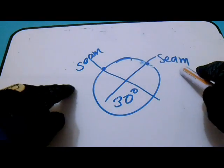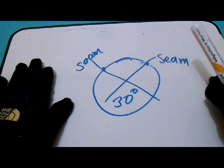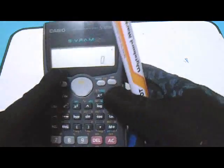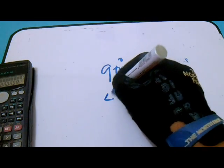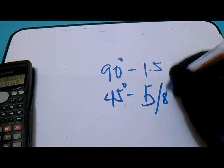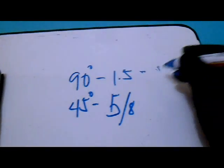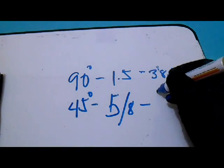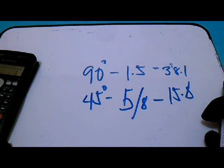This is very important. You must also check the seam line. From the take-off of the spool, our 90 degrees is 1.5 and 45 degrees is 5.8. In millimeters, this is 38.1 and this one is 15.8. Please take note.